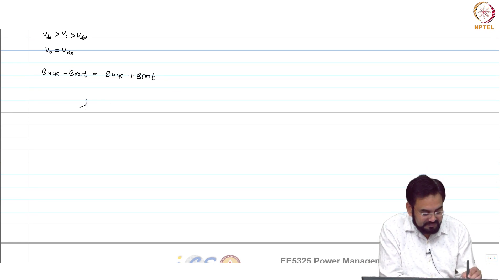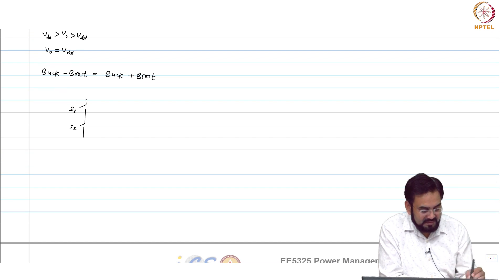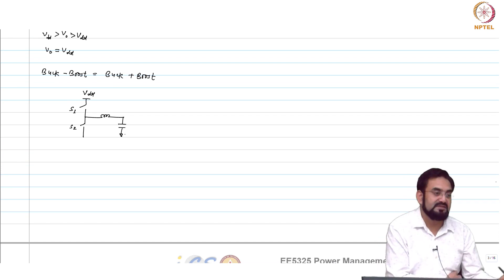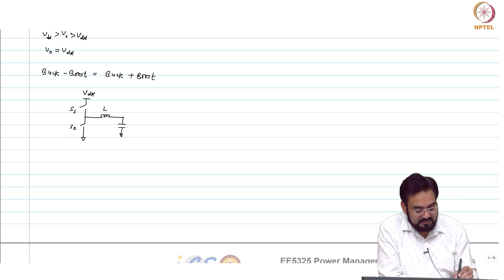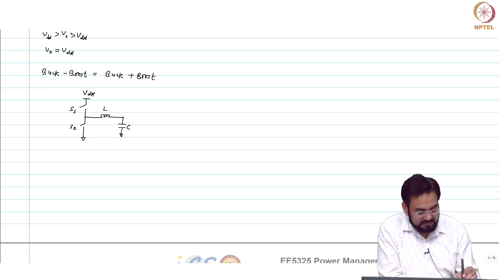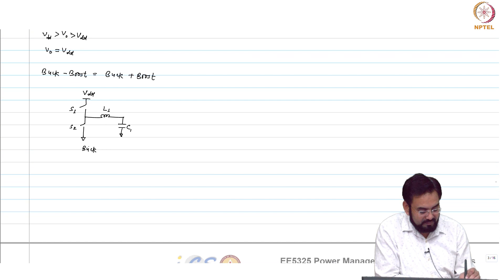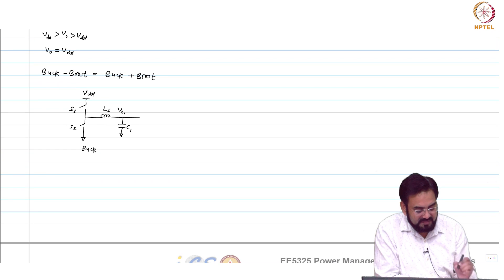Let us say I have this topology. I will call the switches S1 and S2. So what is this? Buck or boost? This is buck. So what is V_out here? If I call it V_o1, it equals d times Vdd.